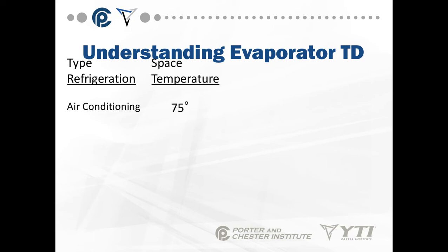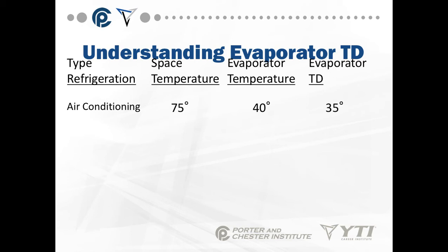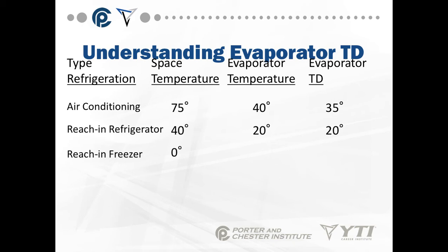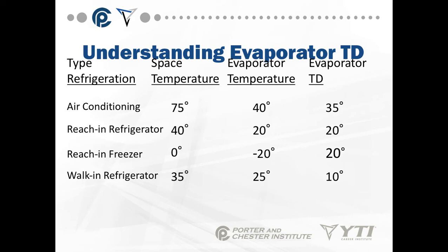To understand evaporator temperature difference, we need to know the type of refrigeration. Air conditioning: space temperature 75°F, evaporator temperature 40°F, temperature difference 35°F. Reach-in refrigeration: space temperature 40°F, evaporator temperature 20°F, temperature difference 20°F. Reach-in freezer: space temperature 0°F, evaporator temperature -20°F, temperature difference 20°F. Walk-in refrigerator: space temperature 35°F, evaporator temperature 25°F, temperature difference 10°F.